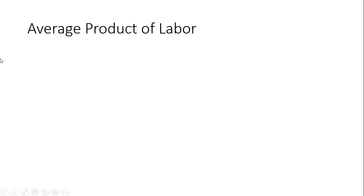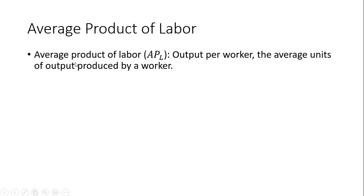A key concept in the short run is average product of labor. This is output per worker — the average units of output produced by a typical worker. The formula for average product of labor is the quantity of output divided by the units of labor that produced that output.